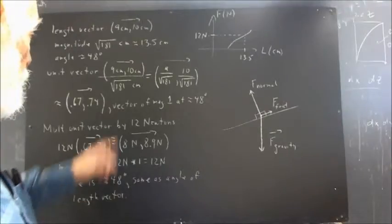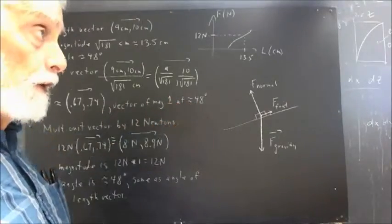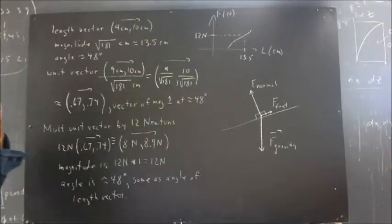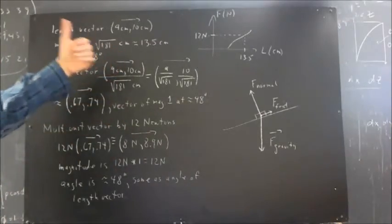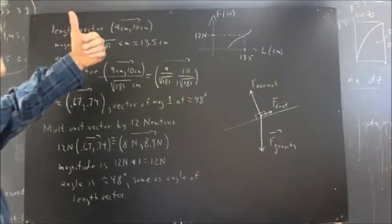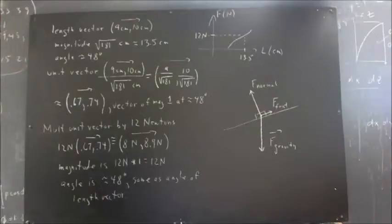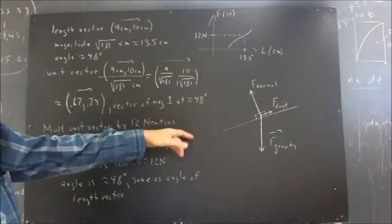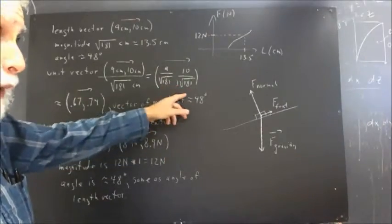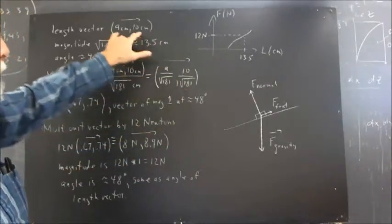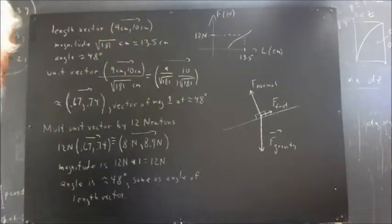And it's going to also make angle 48 degrees, because as we've seen, when you multiply or divide a vector by a positive number, you don't change its direction. The slope is still the same. The rise over the run, the y over the x, would be the same for this vector as it is for this vector.